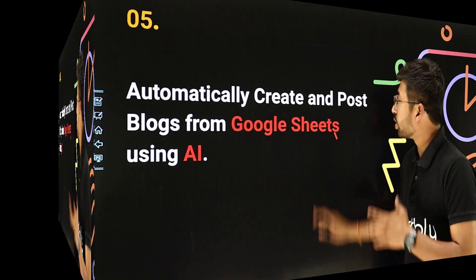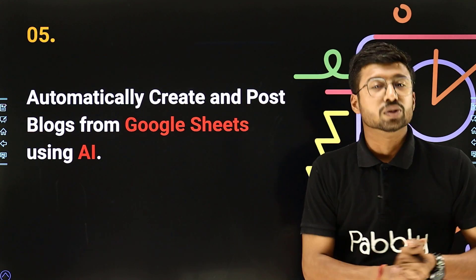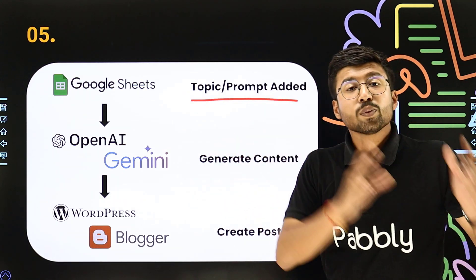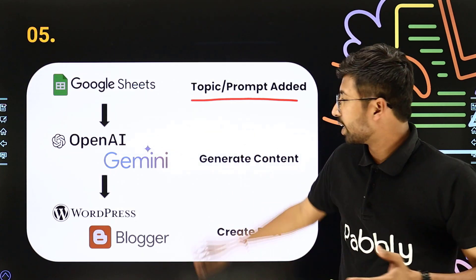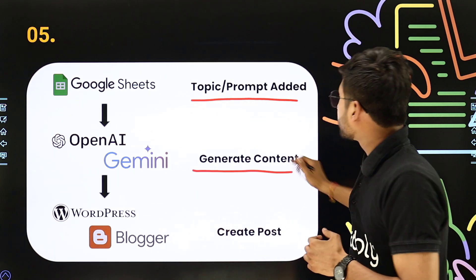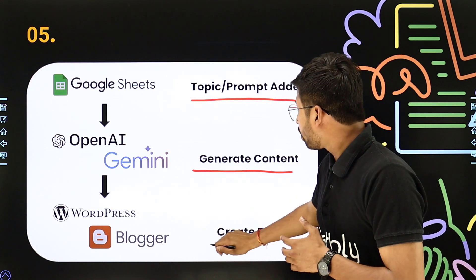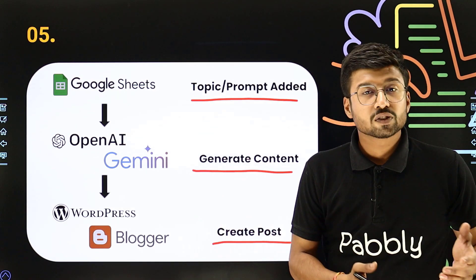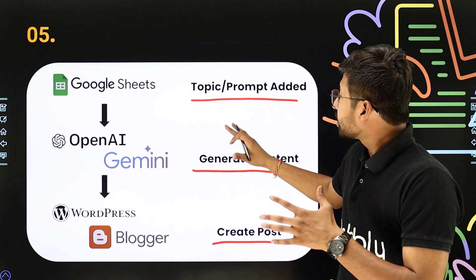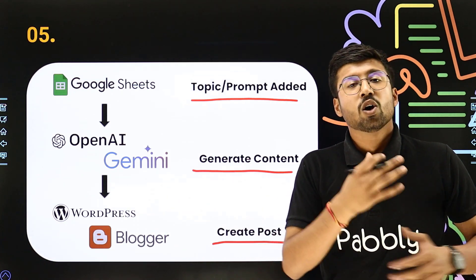Now let's move to the final automation for the day, that is automatically creating posts and blogs from Google Sheets and AI — and this is my personal favorite. Just by adding the topic or the prompt for the blog in your Google spreadsheet, you can automate the process of generating content and posting it. Using AI tools like OpenAI, Gemini or any other AI tool, you can generate content for that topic and create blog posts on WordPress, Blogger, Wix, Webflow or even Shopify blogs, completely eliminating the process of writing blogs manually.